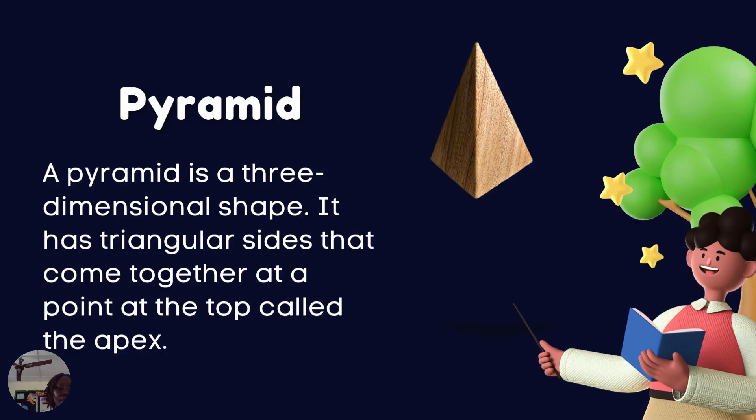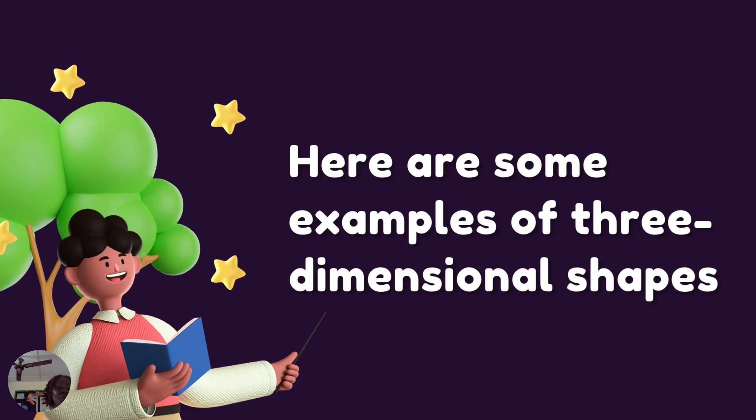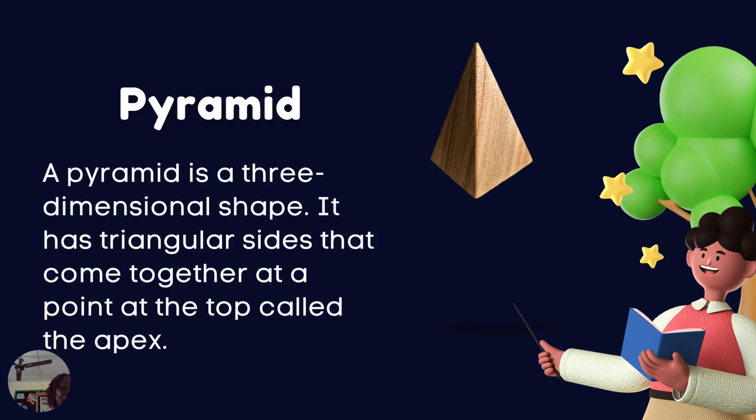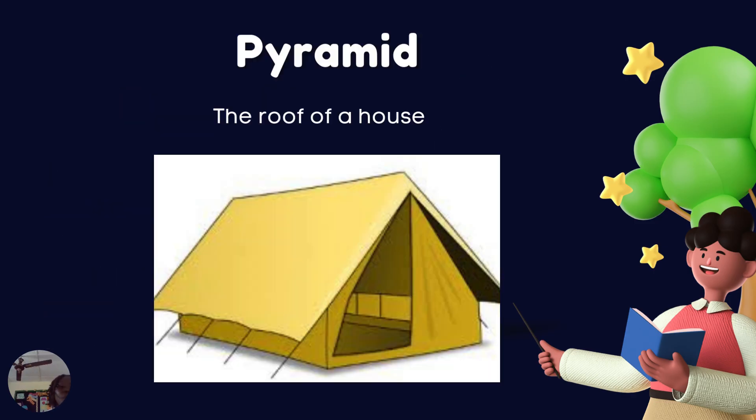For example, here are some examples of three-dimensional shapes. We have pyramid. A pyramid is a three-dimensional shape. It has triangular sides that come together at a point at the top. It is called an apex. An example of a pyramid is the roof of your house.